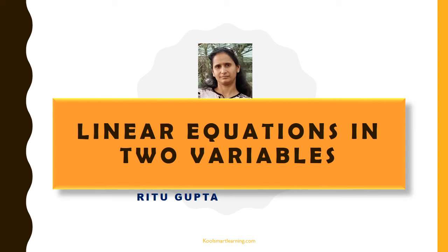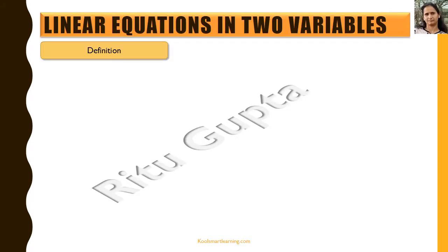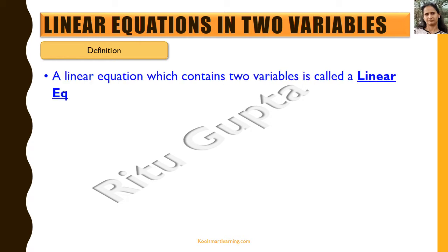Hello friends, we'll be talking about linear equations in two variables in this session. Let's start with the definition. We've already studied linear equations in one variable, so we know what variables are — we denote them by alphabets and they can take different values. A linear equation is an equation of degree one. Any linear equation which contains two variables is called a linear equation in two variables.